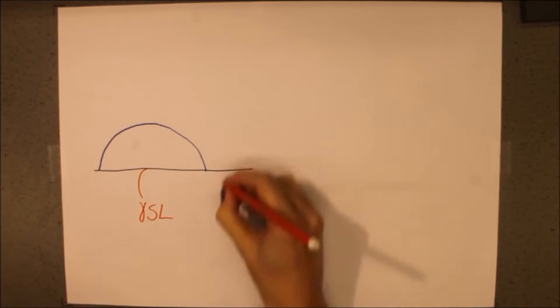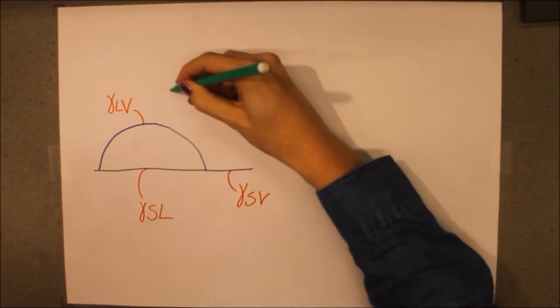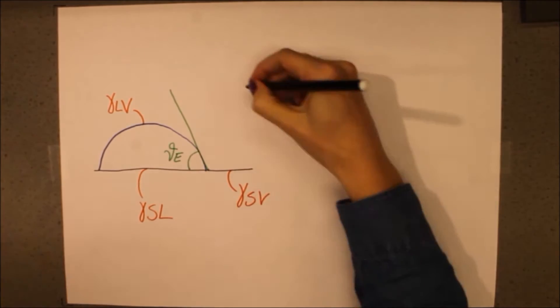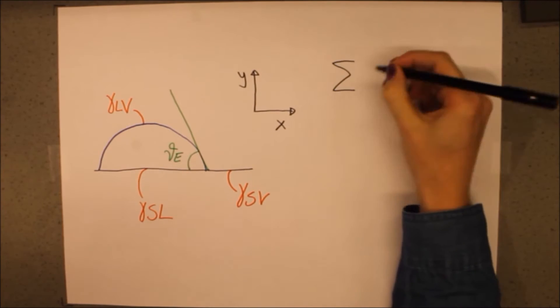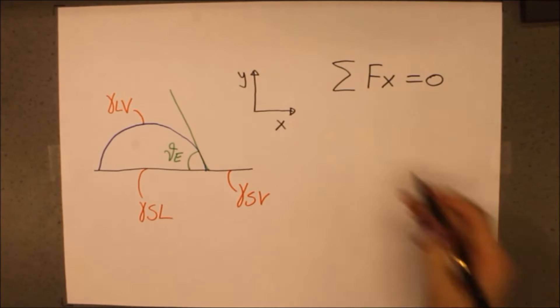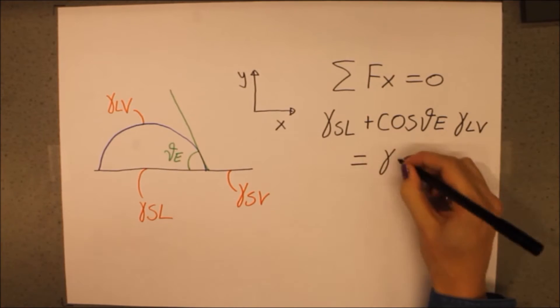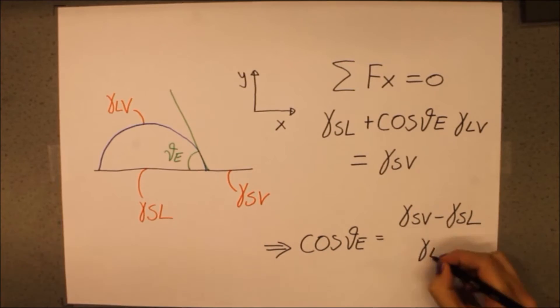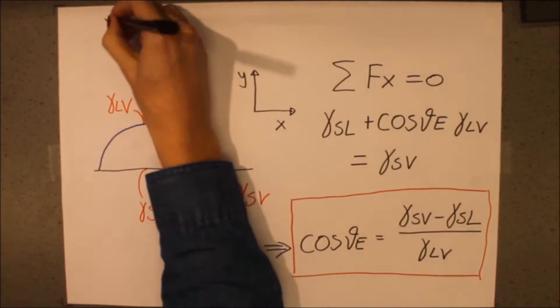The value of the equilibrium angle can be determined by looking at the three surface tensions. Since we're looking at a static state, all surface tension forces should add up to zero. Investigating the x-direction and equating the sum of the forces to zero, we find the formula for the equilibrium angle in terms of the three surface tensions. This relation is called Jung's equation.